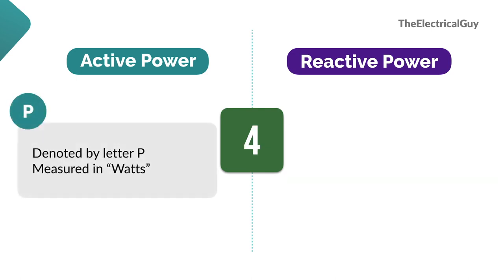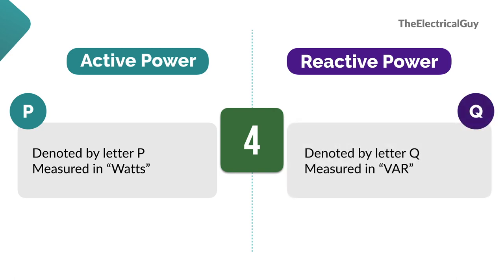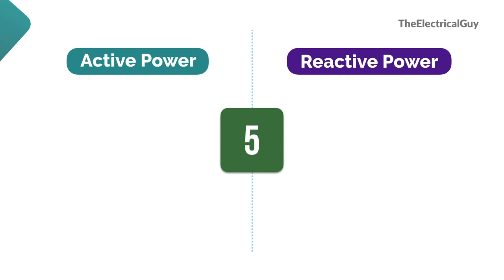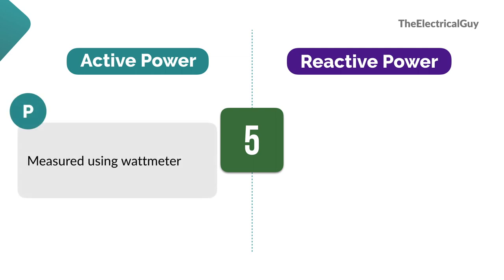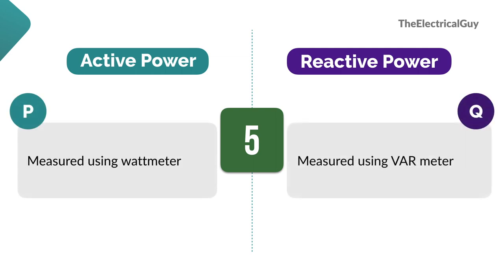Active power is denoted by the letter P and is measured in watts. Reactive power is denoted by the letter Q and is measured in VAR, that is volt-ampere reactive. We measure active power using a wattmeter, and to measure reactive power we need a special meter called a VAR meter, which reads reactive power by multiplying voltage with current times sin theta. A reading will only be obtained if the current and voltage are out of phase.